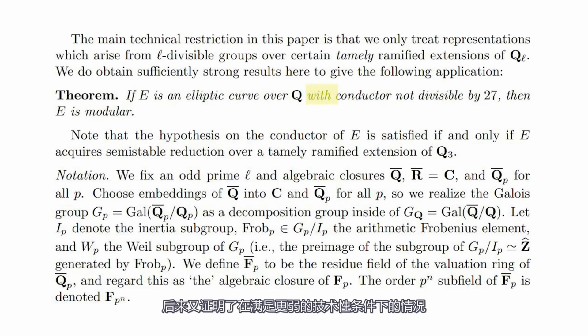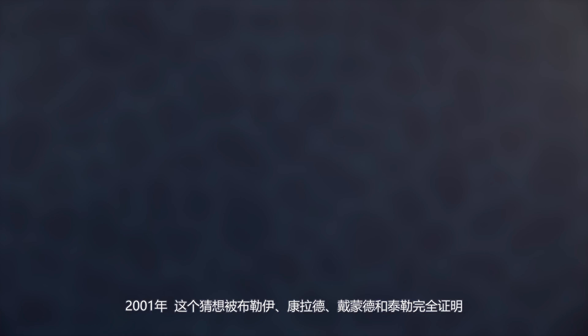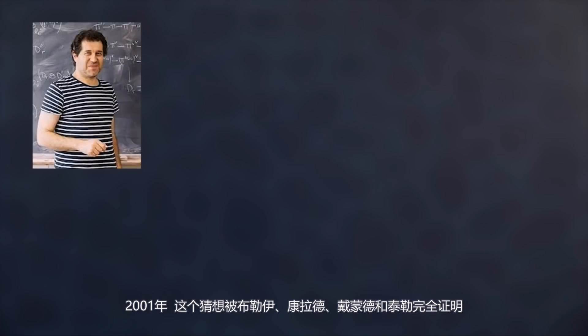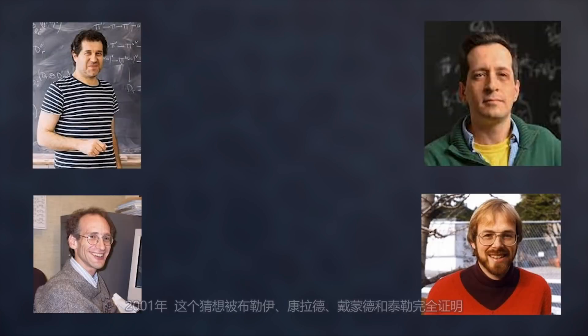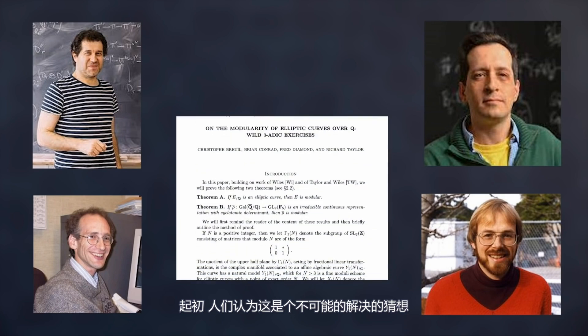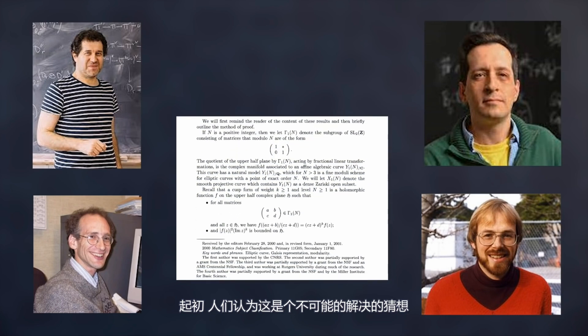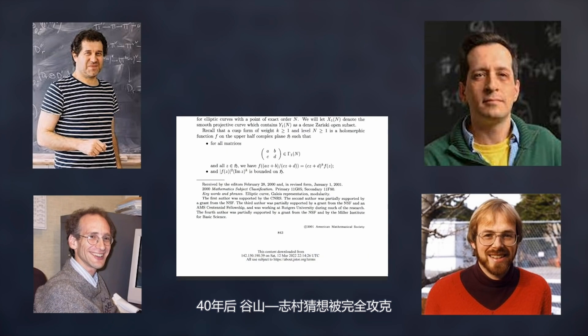Then it was proven for all curves satisfying an even weaker technical condition. And then in 2001, the full conjecture was proven by Breuil, Conrad, Diamond, and Taylor. And thus, a theorem that first seemed impossible to attack just 40 years later was completely solved.